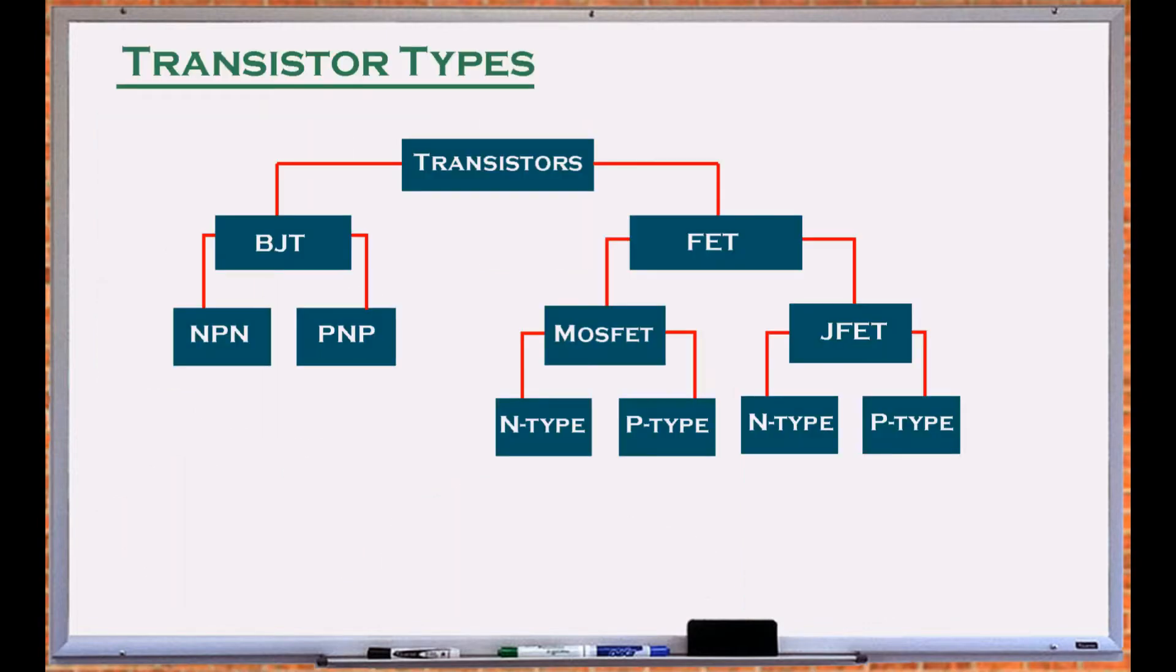Most transistors are three terminal devices constructed from different semiconductor materials. Bipolar and CMOS are the most common types of transistors. In this tutorial, we will cover bipolar transistors.